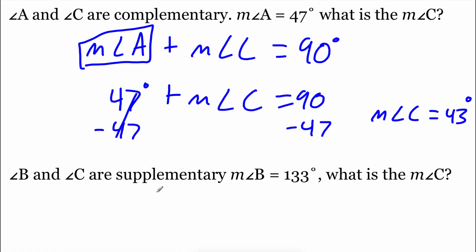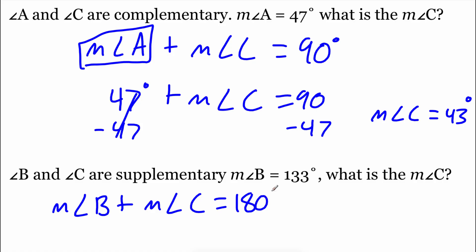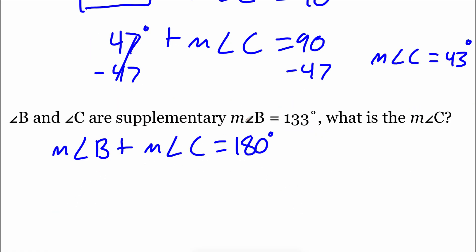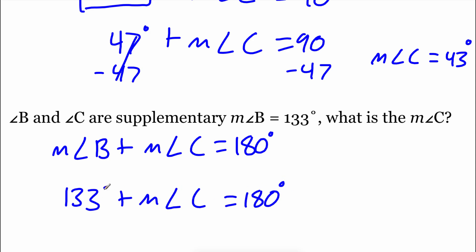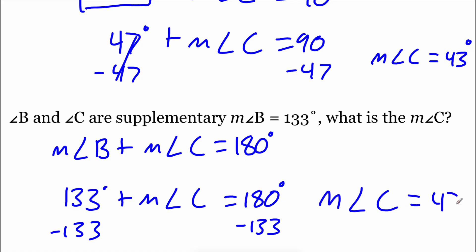Our next example deals with supplementary angles. Here we have angle B and angle C, so the measure of angle B plus the measure of angle C equals 180 degrees. We're told the measure of angle B is 133 degrees, so 133 plus the measure of angle C equals 180 degrees. Subtracting 133 from each side, we get the measure of angle C equals 47 degrees.